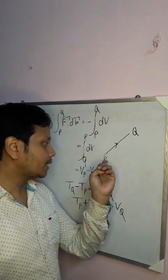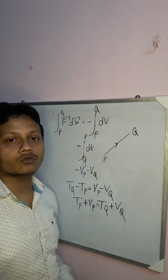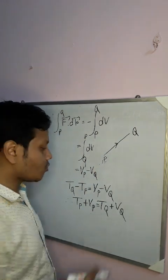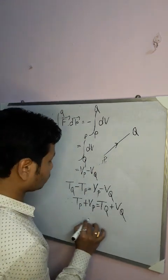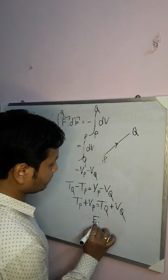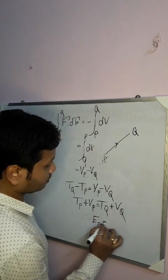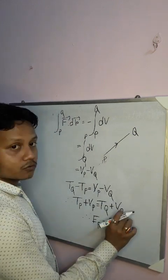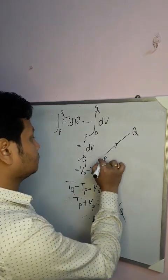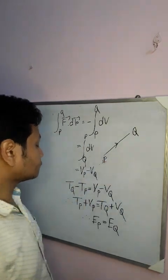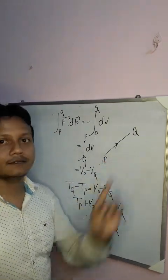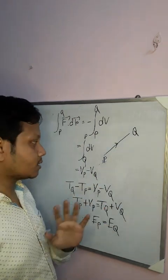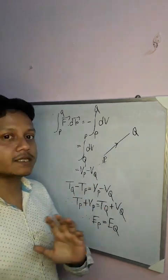Setting both expressions equal: T_Q minus T_P equals V_P minus V_Q, so T_P plus V_P equals T_Q plus V_Q. Thus total energy at P equals total energy at Q, which is constant. We can write E_P equals E_Q.